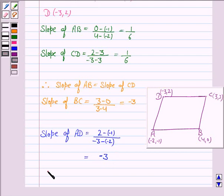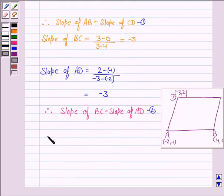Therefore, slope of BC is equal to slope of AD. Let's call this as equation (1) and this as equation (2).